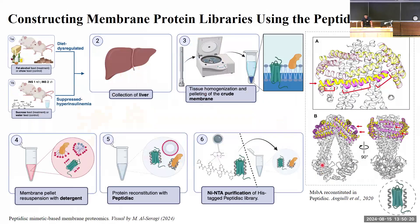We obtained liver from mice fed a high-fat, high-alcohol diet, and mice with a single copy number reduction in the INS1 gene fed a high-sucrose diet. We homogenized the tissue, pelleted down the crude membrane fraction, and re-solubilized these membrane proteins in detergents. We then used a histidine-tagged amphipathic peptide mimetic to procure a library selectively enriched in membrane proteins, which we then analyzed using mass spectrometry.